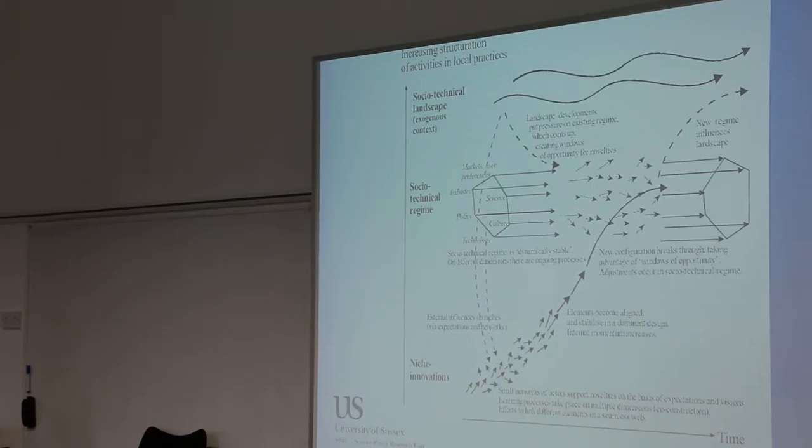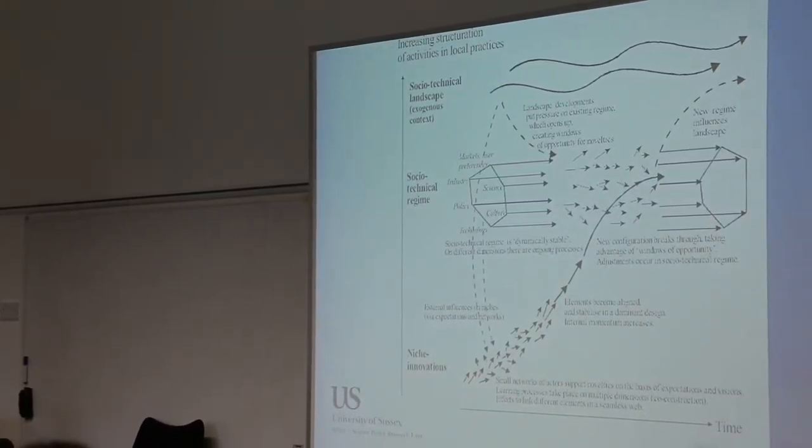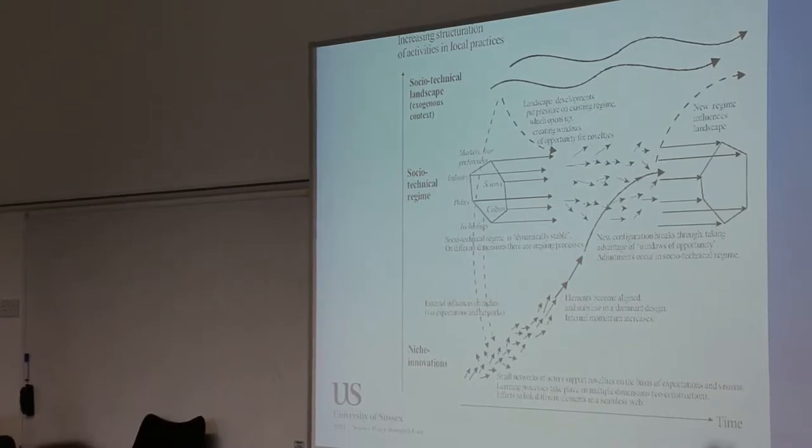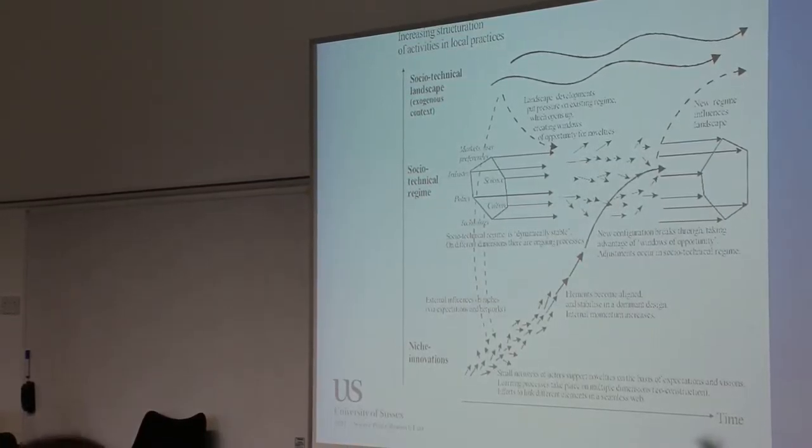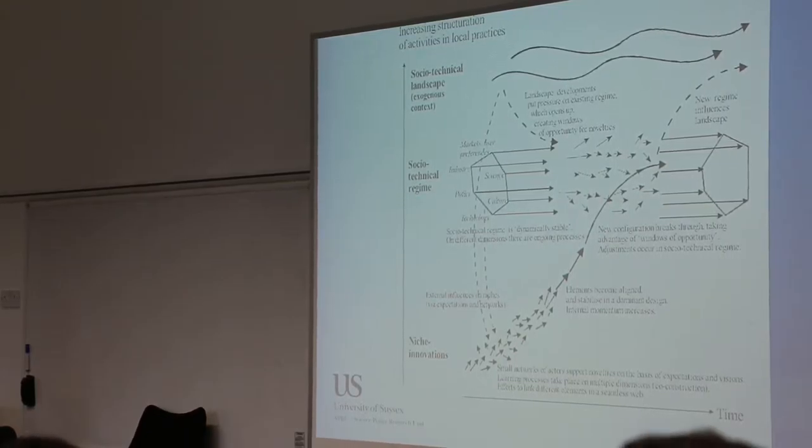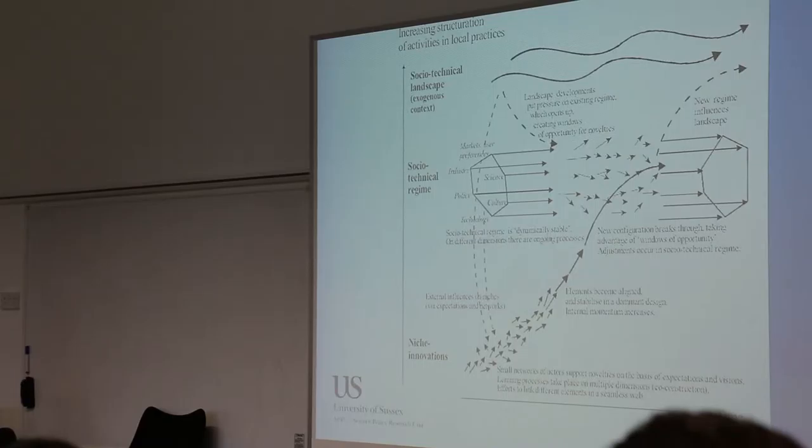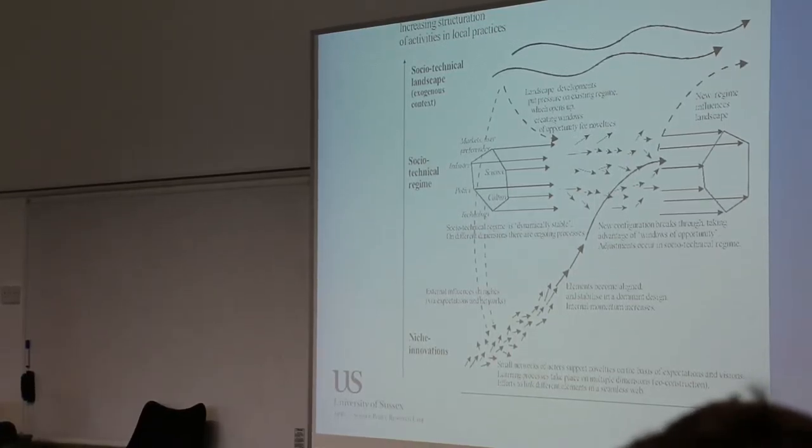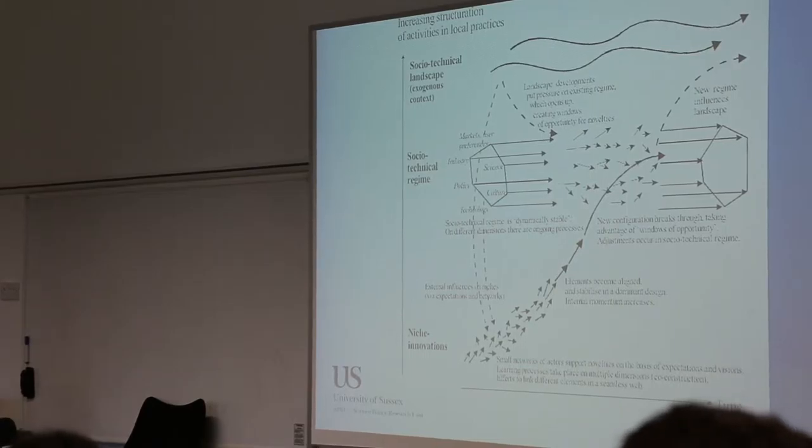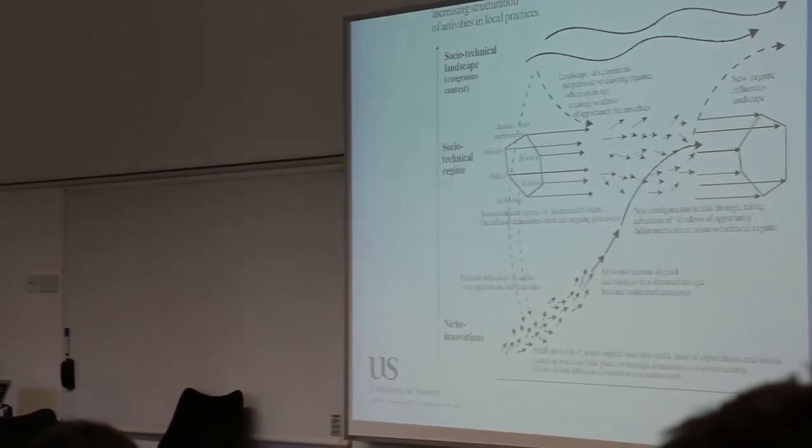Because the idea was that we were asked by the Dutch government whether we could think of new policies, because the environmental policy was clearly not working. They needed new policies to think about sustainable development. And the answer we gave was we need system change. So how does system change come about?